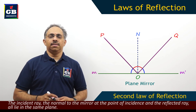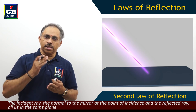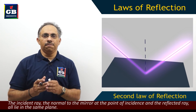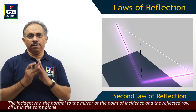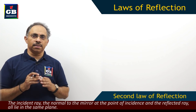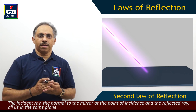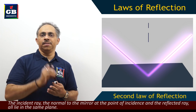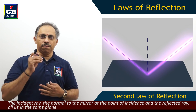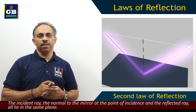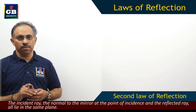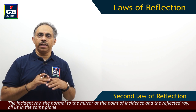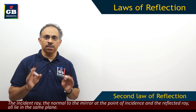The second law is: the incident ray, the reflected ray, and the normal at the point of incidence — all these three will lie in a single plane. So basically the second law tells that the incident ray, the reflected ray, and the normal at the point of incidence all lie in a single plane. These two laws of reflection govern the total reflection phenomenon, whether you take regular or diffuse or any type of reflection.